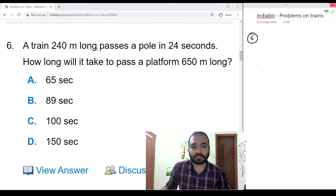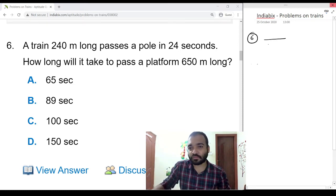A train 240 meters long passes a pole in 24 seconds. One train is there, 240 meters length, it passes the pole in 24 seconds.